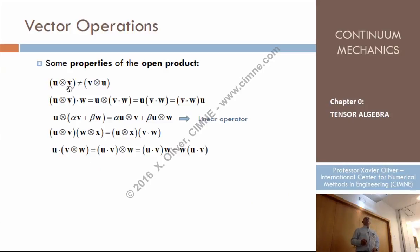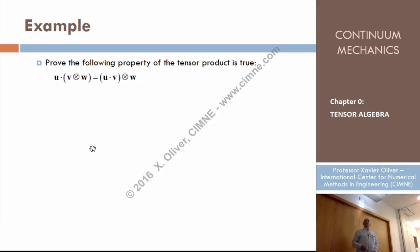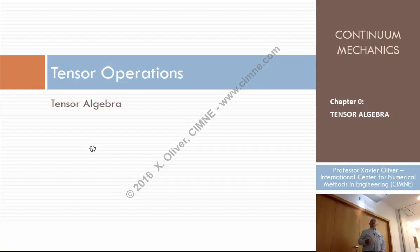Some properties: the tensor product is not commutative — U times V is not equal to V times U, you can check it. It is also linear: U times (alpha·V + beta·W) equals alpha·(U times V) plus beta·(U times W). These are some operations and properties; there is also an example developed in the slides, but we'll skip that for now.